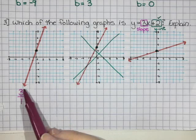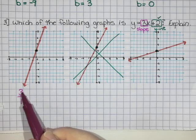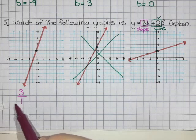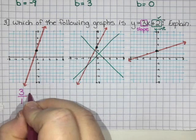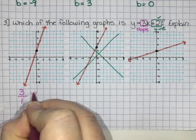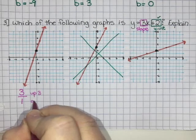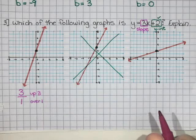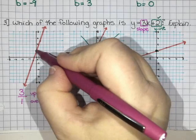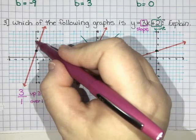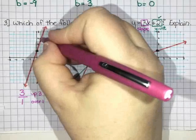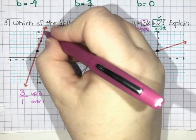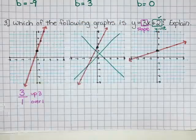I'm looking for something that's going to go up 3 and over 1. If I look at my first one, I'm going 1, 2, 3 up and 1 over, and I am still on the line. Then 1, 2, 3 up, 1 over, and I'm still on the line.